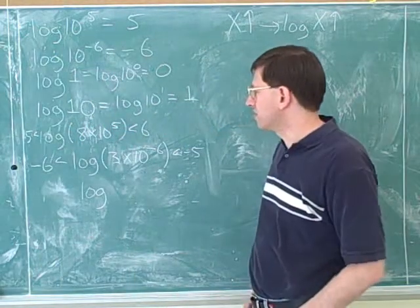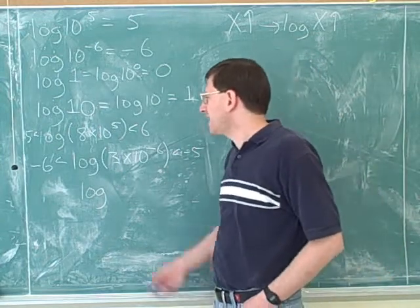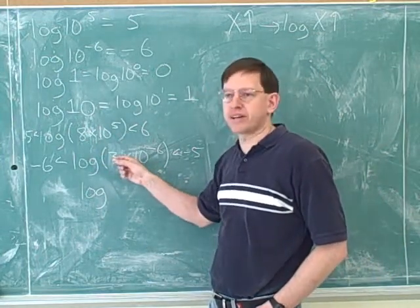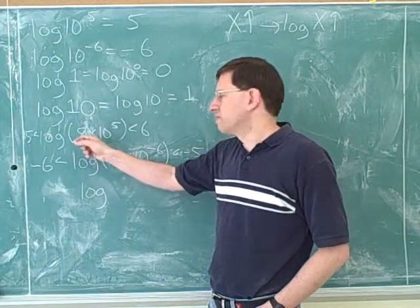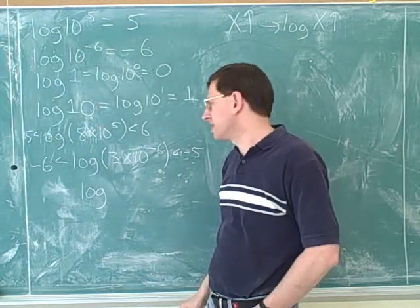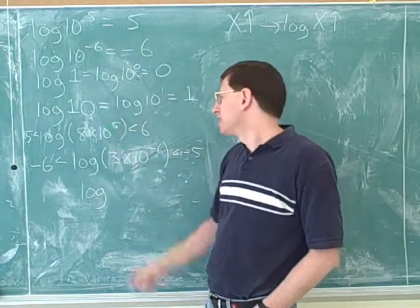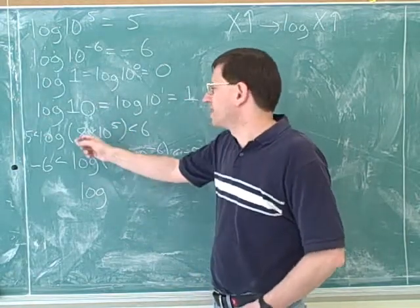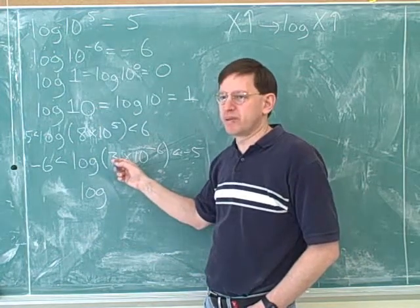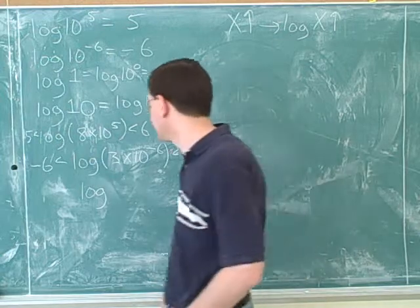By the way, one thing that's not confusing you, which is good — it turns out that these coefficients here are not having any effect on our approximation. We didn't really use the number 8 when we did this approximation. The logarithm really just depends on the power of 10. The number 8 and the number 3 didn't play a very big role. What really matters is the power of 10 that we're dealing with.